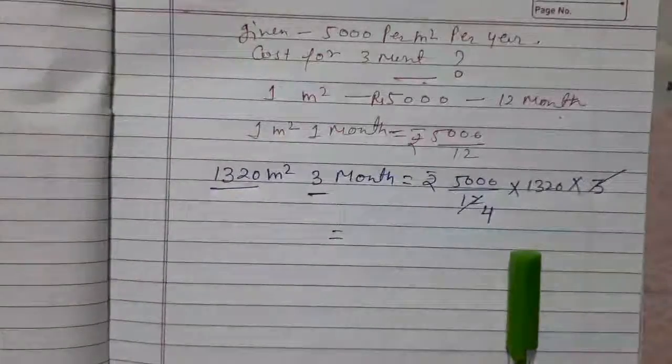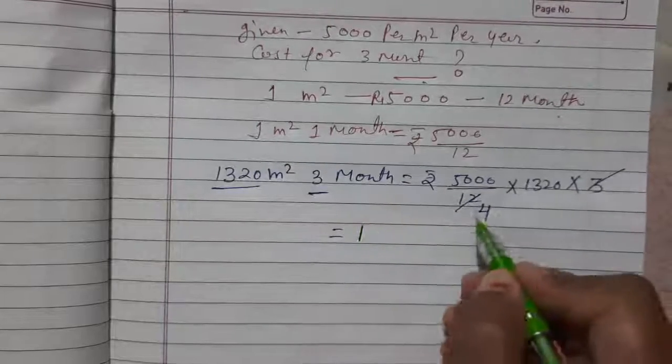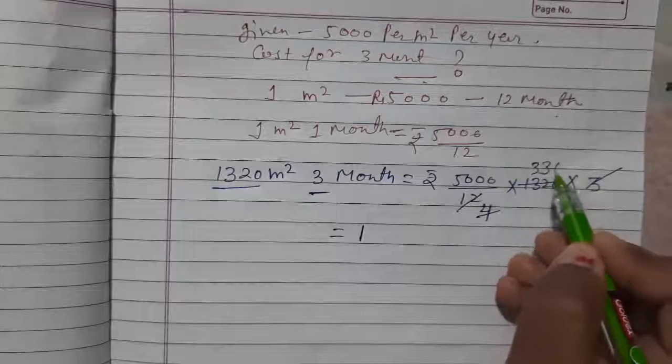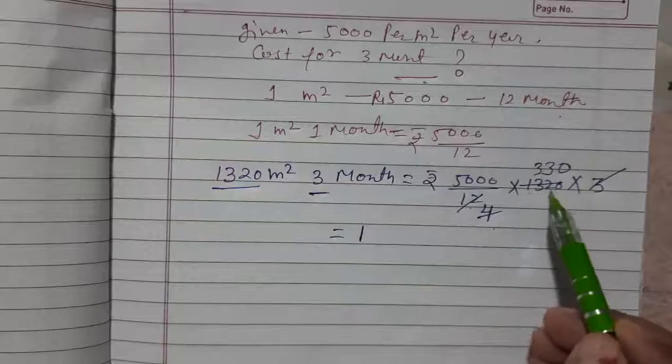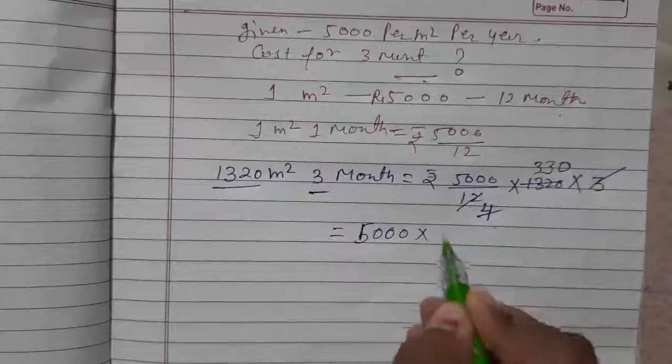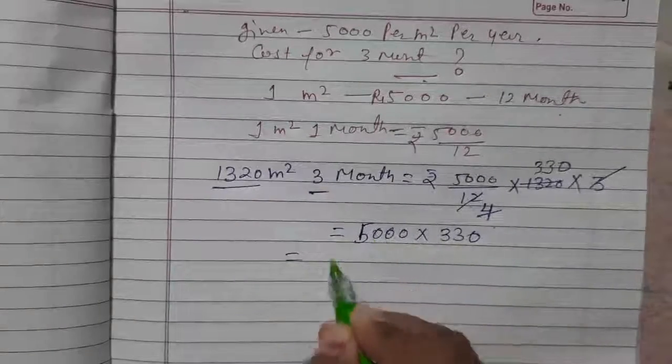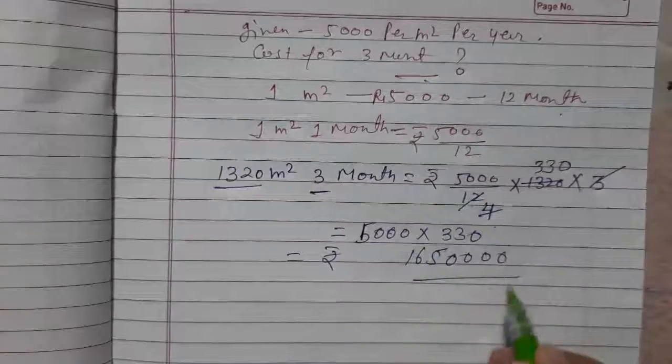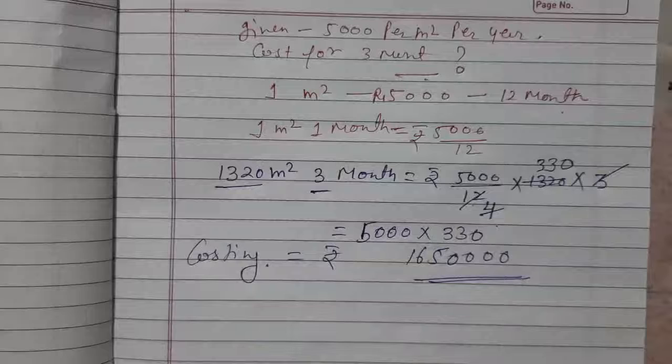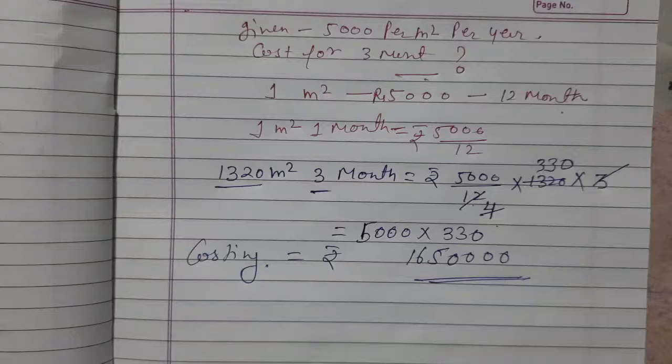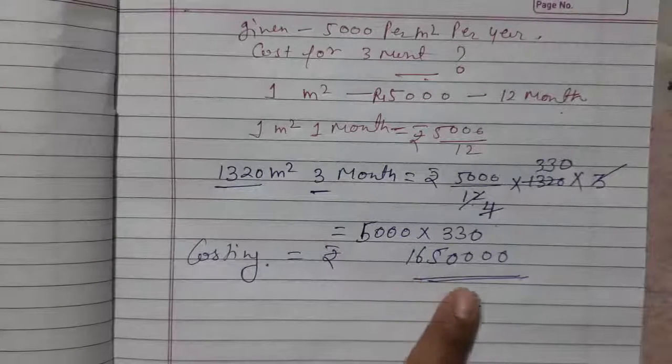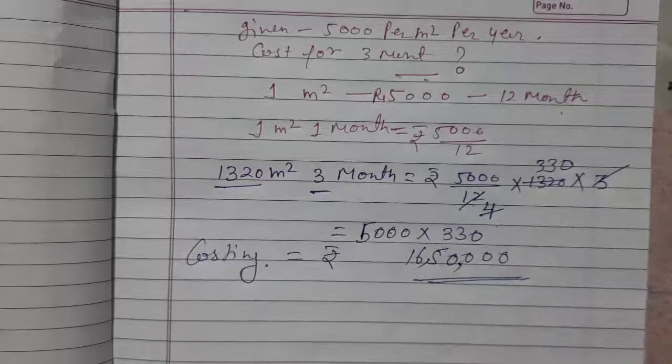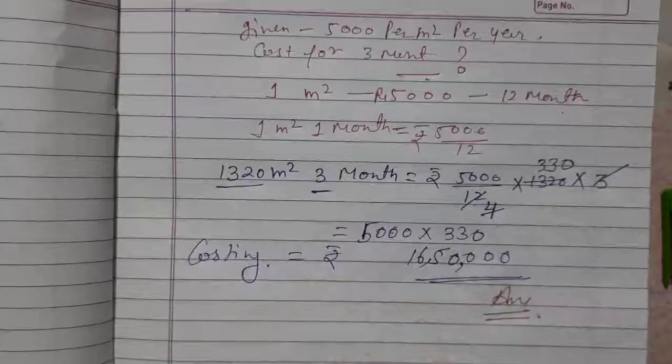Now simplify: 5000 into 330 equals 1,650,000 rupees. So the costing at the rate of 5000 per meter square per year, for 3 months, the costing is 16 lakh 50 thousand. That will be the cost. That is it. So it is the solution of our Question Number 2.